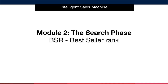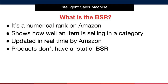That one marker is, of course, the BSR, or bestseller rank of an item. In simple terms, the BSR is a numerical sales rank on Amazon that shows how well an item is selling in a category. These BSRs are updated in real time by Amazon as items sell.